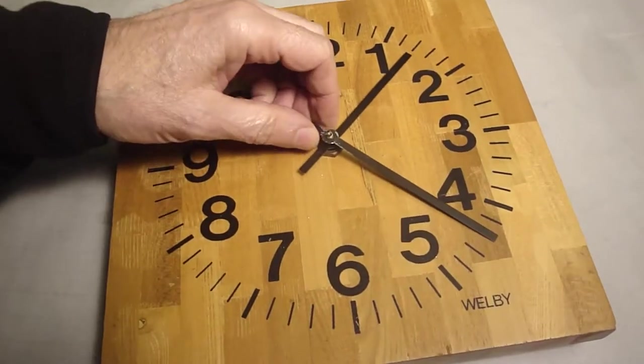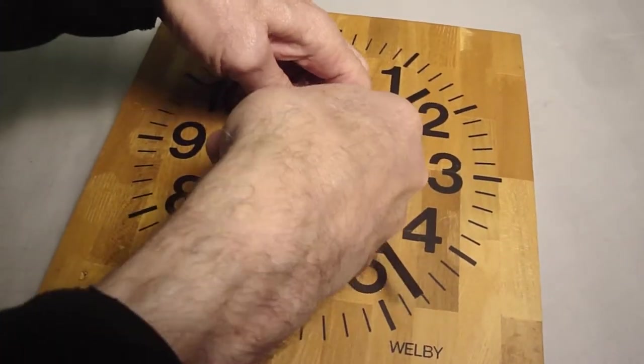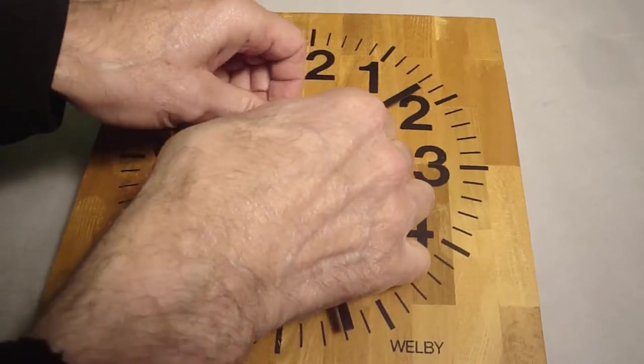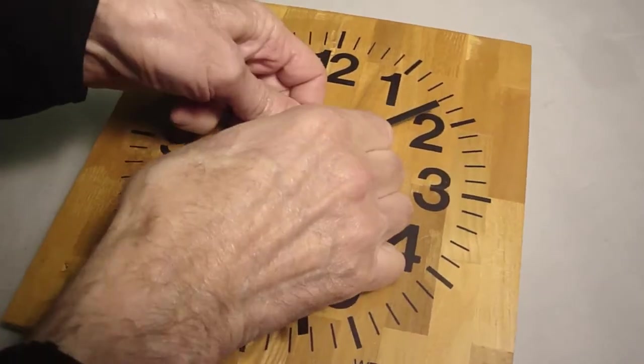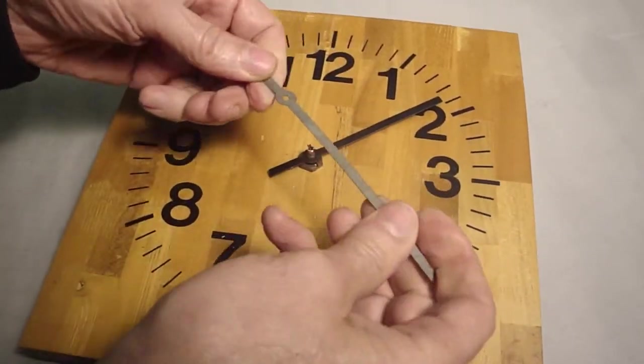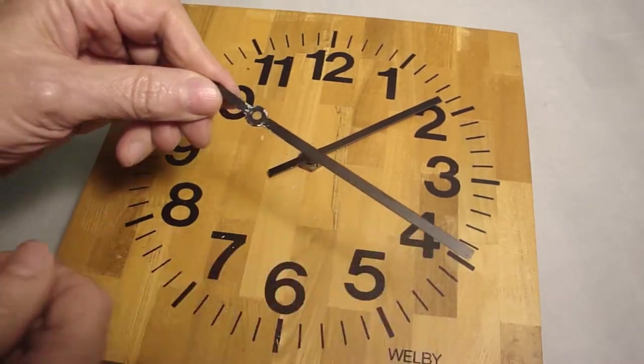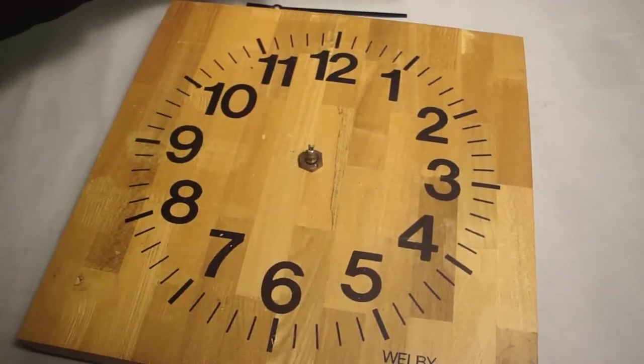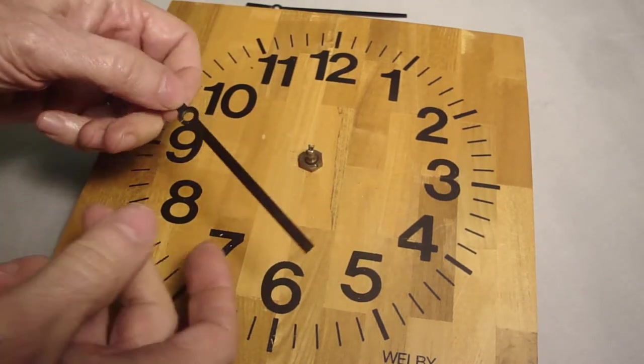Start by taking the hands off. Just pull right off. Easy to say, huh? Okay, there's the minute hand. Hour hand pulls right off. Save them. You may want to reuse them.